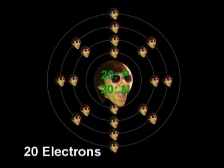This is what an atom of calcium looks like. It has 20 protons and neutrons in the center of the nucleus, and 20 electrons on the outer rings.